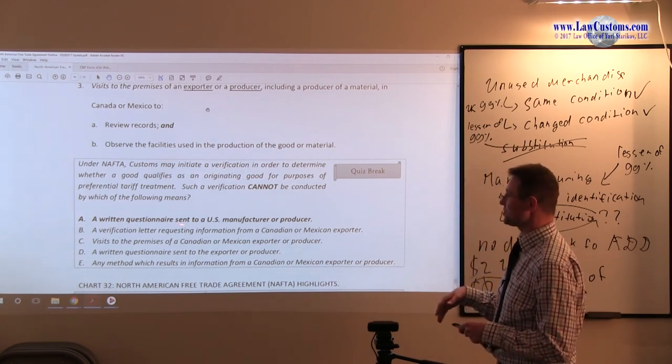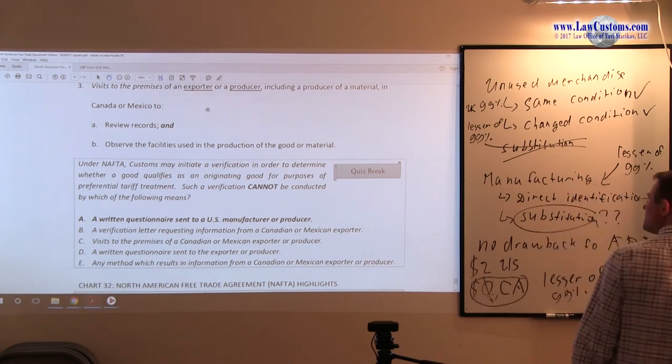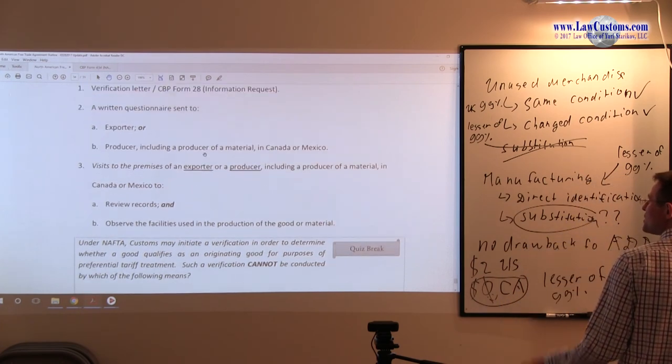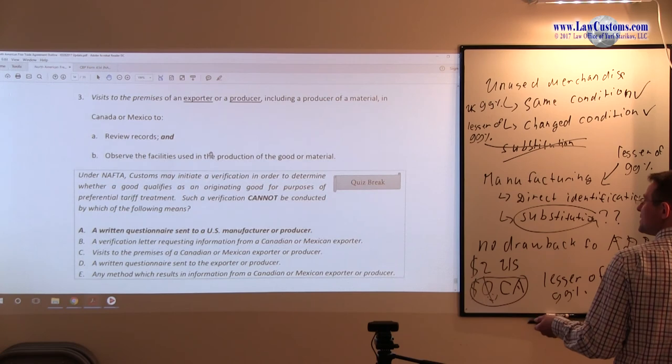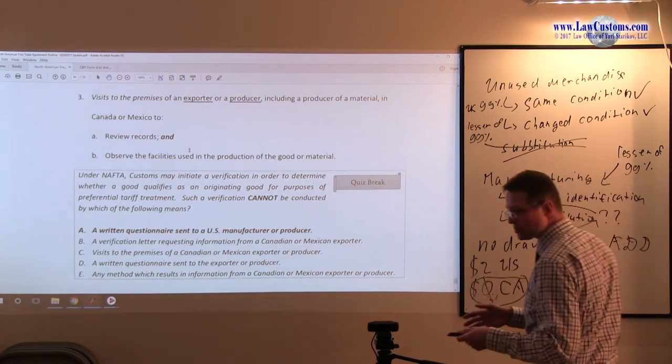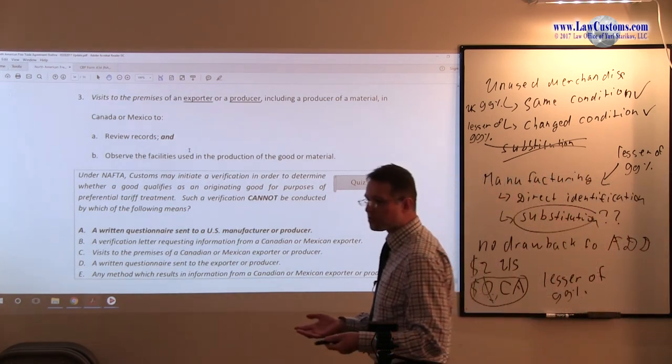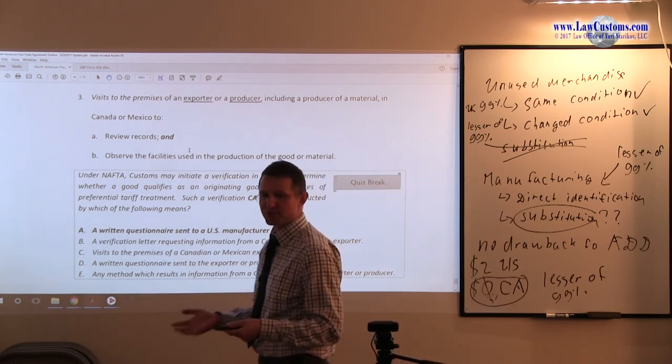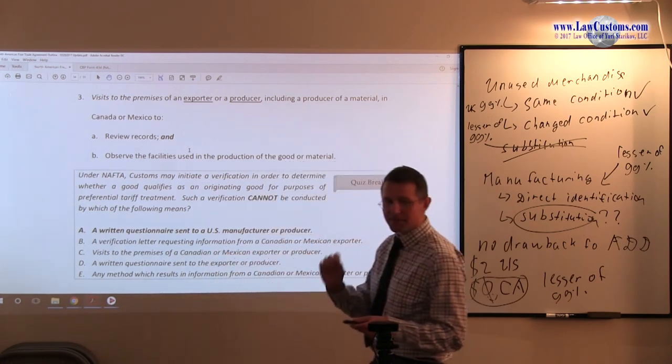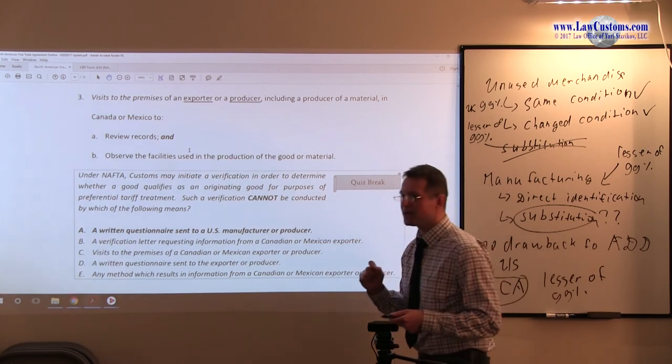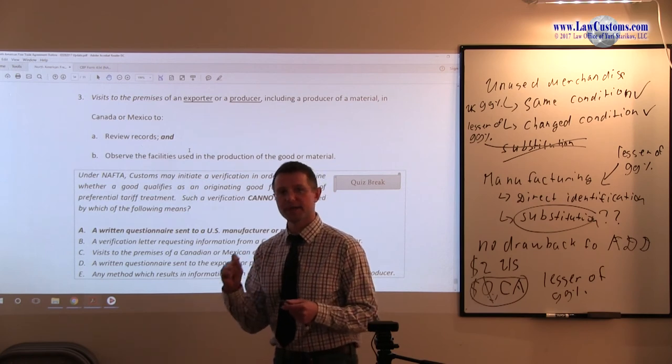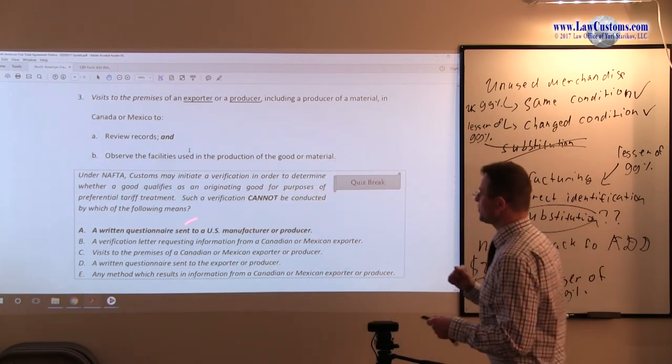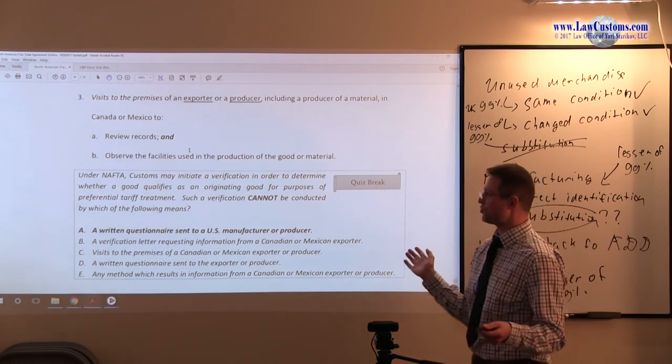Of course, A stands out: a written questionnaire sent to US manufacturer. Remember what I said about US manufacturer? No, it must be Canada or Mexico, questionnaire sent to the producer or exporter of Canada or Mexico because the burden is on the exporter to prove that the product qualifies, not on the importer. Again, this is one of the intricacies of the NAFTA that the burden lies with the exporter. Here when you have the burden on the US manufacturer or producer, no.